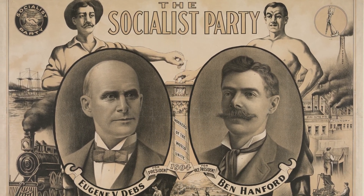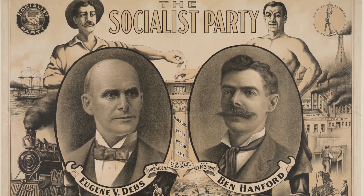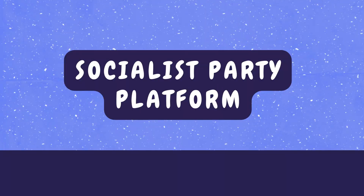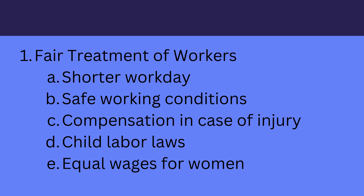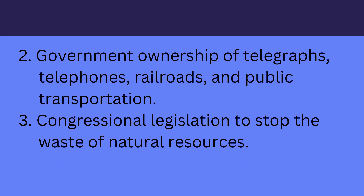The Socialist Party's political platform was very similar to the Populists and included reforms such as fair treatment of workers, including a shorter workday, safe working conditions, compensation in case of injury, child labor laws, and equal wages for women. Also included was government ownership of telegraphs, telephones, railroads, and all means of public transportation.